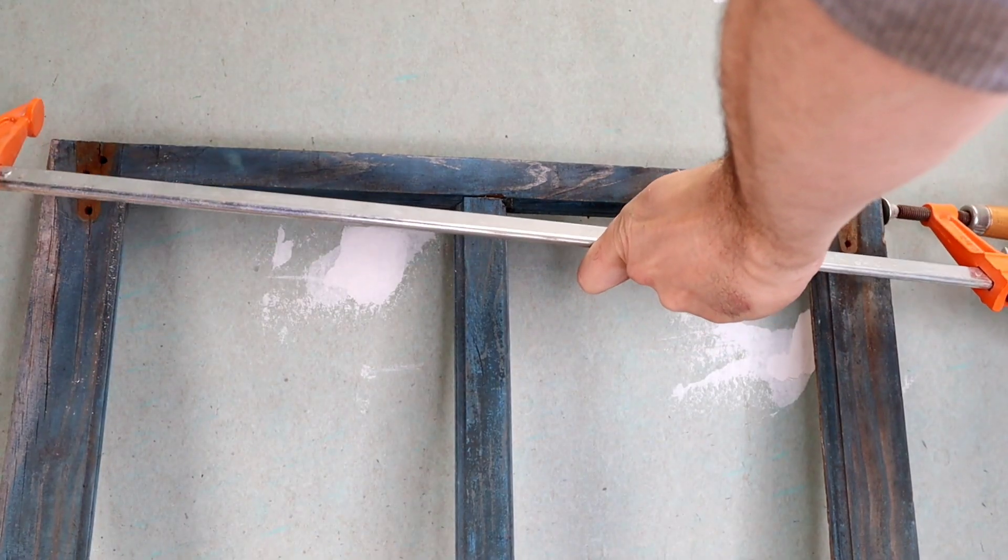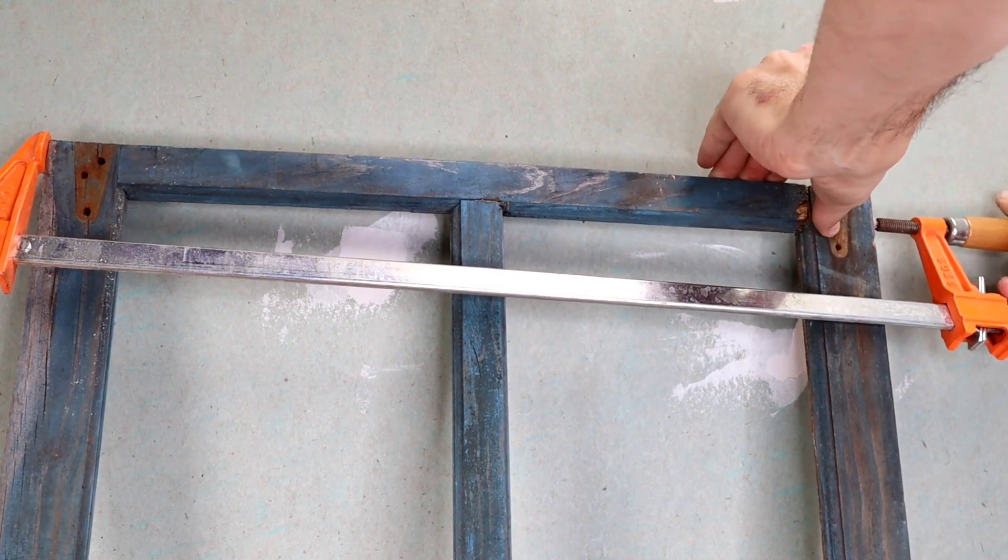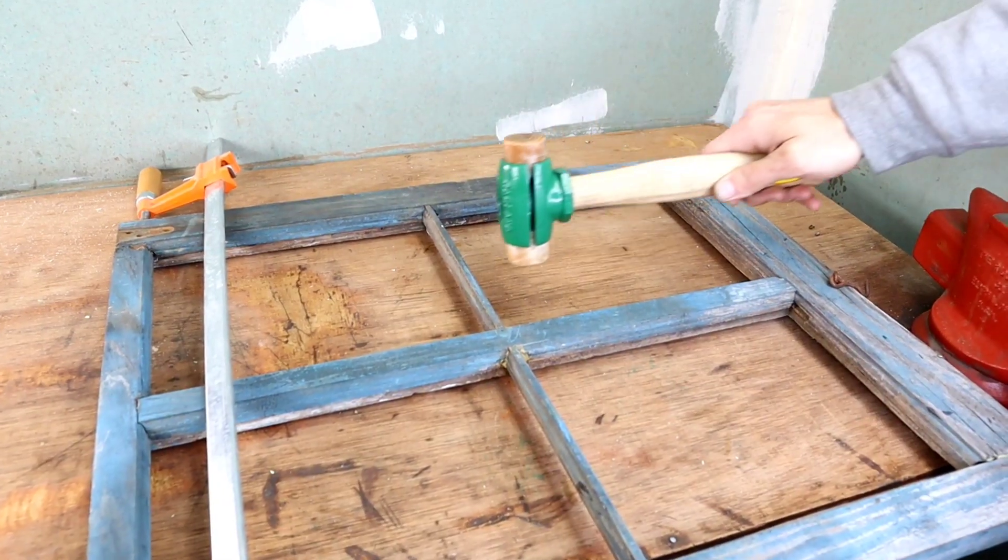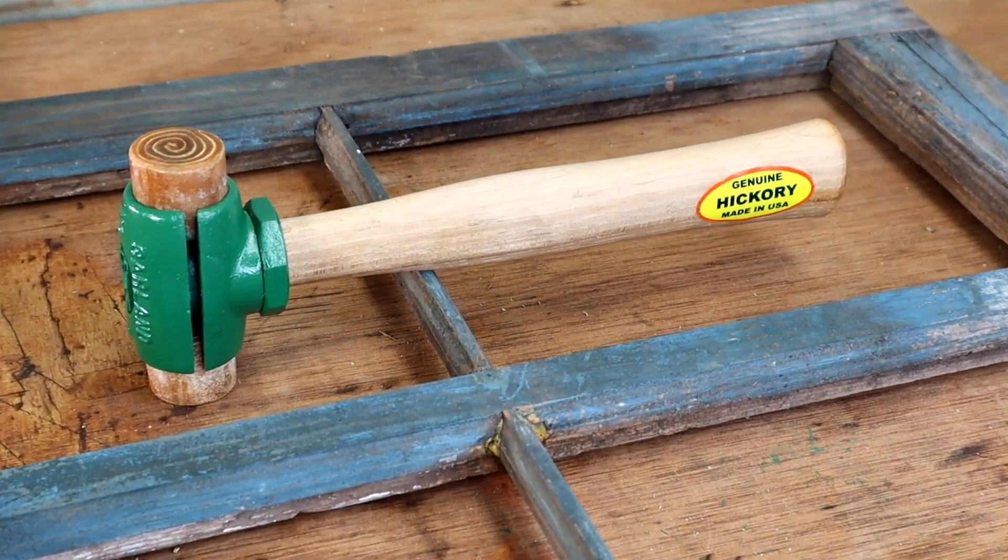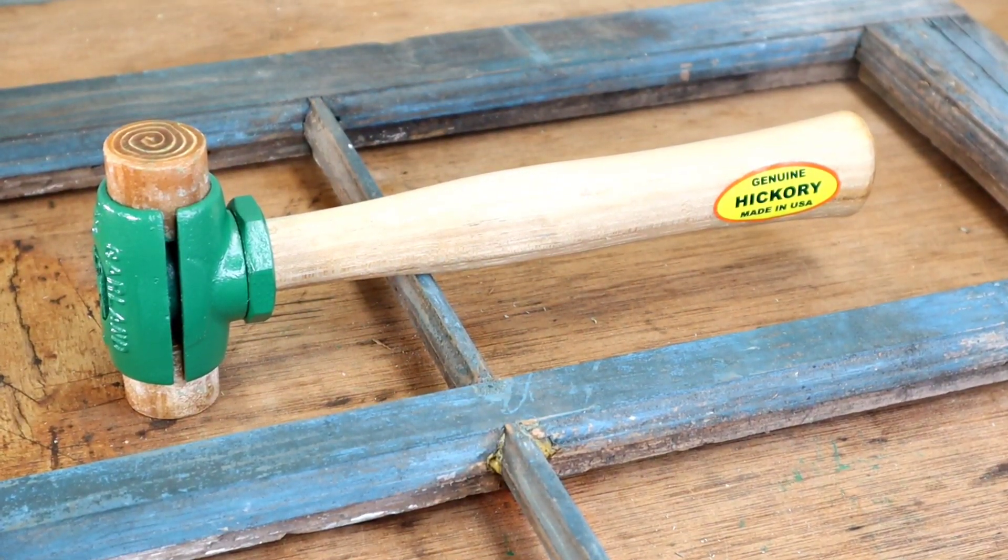The hardest part of this restoration was tracking down the new faces from the local distributor. My favorite part was making the new roll pin. This restoration cost about $12 for the replacement faces, and it took about 15 hours to complete. We restored another American-made tool with American-made tools. See you next time.